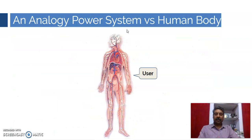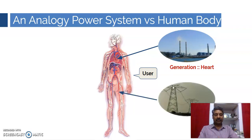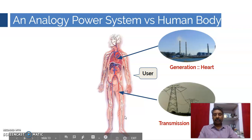This is the analogy of power system with the human body. The human body is the user. The heart of the human body can be compared with generation — without the heart we will not survive, similarly without generation the system will not exist. The transmission lines can be compared with the main arteries, which circulate blood throughout our body. Similarly, these main arteries transmit power from generation to the secondary transmission levels or distribution levels.